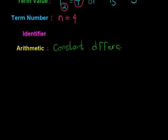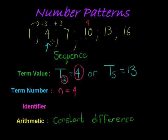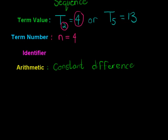Between consecutive terms, like our example was an arithmetic sequence because there's a constant difference. If I take 4 and subtract 1, I get 3. If I take 7 and subtract 4, I get 3. So for the arithmetic sequence we have a constant difference, and we use D to indicate it. Constant difference means it's an arithmetic sequence.